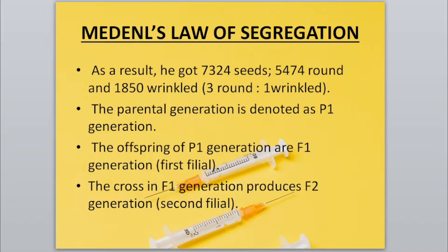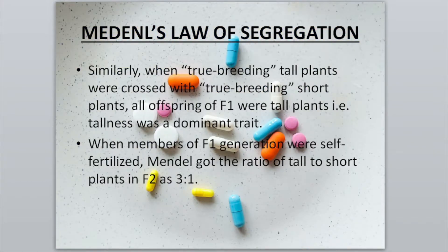The cross of the First Filial generation produces the Second Filial or F2 generation. Similarly, when a true breeding tall plant was crossed with a true breeding short plant, all of the First Filial generation plants were tall, showing that tallness is the dominant trait and dwarfness is the recessive trait.